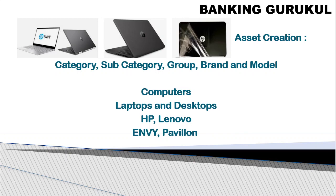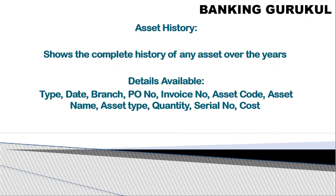To maintain fixed assets, we create asset records since we have paid money and purchased the item. While creating assets, we define a main category — for example, computers, furniture, machinery. Under computers, subcategories can be laptop, desktop, tabs, and mobiles. Within those groups, you can add brand and model — for example, under computers, under laptop, you can have HP or Lenovo, and under that specific models like Pavilion or NV series.